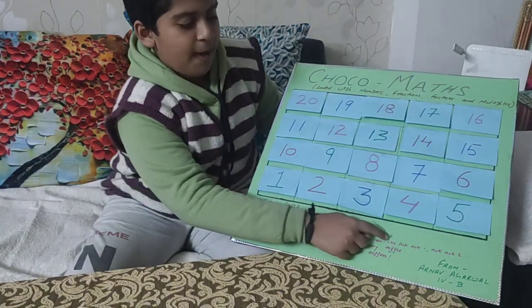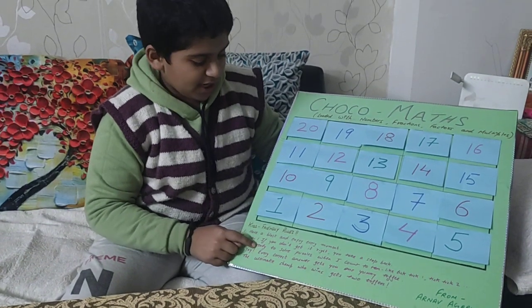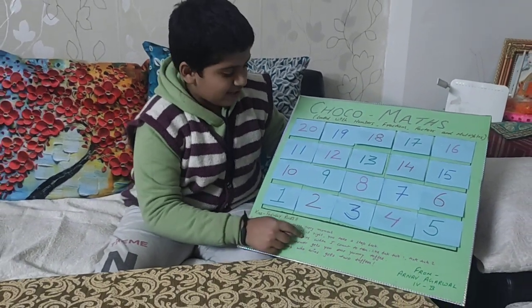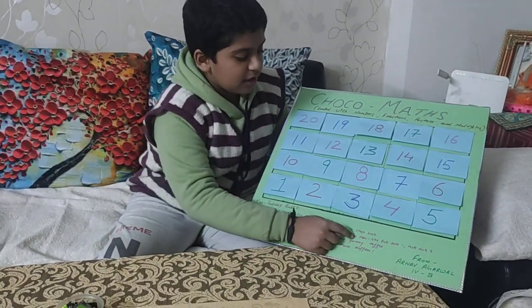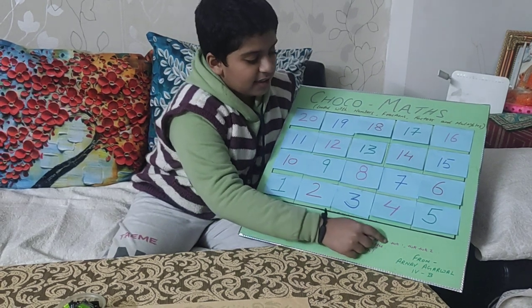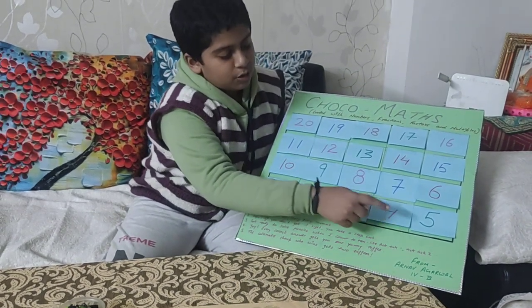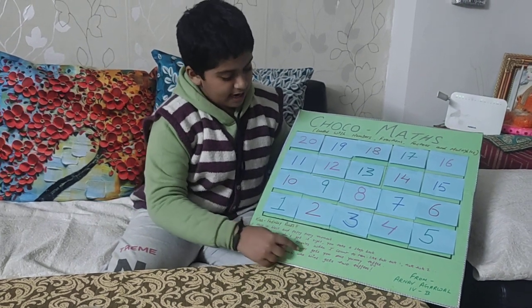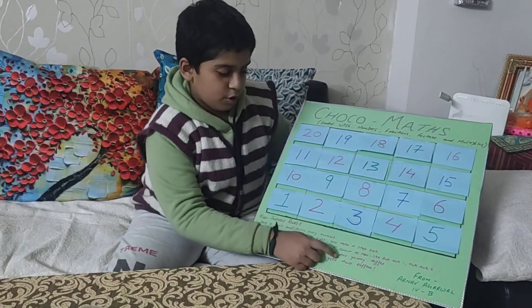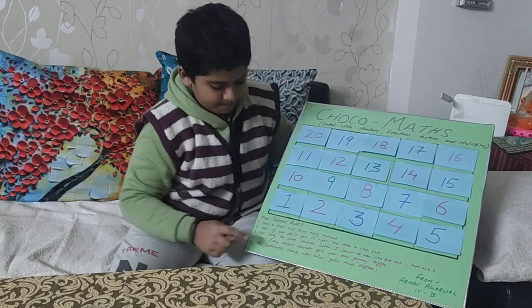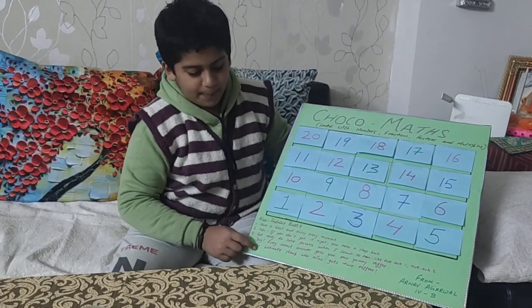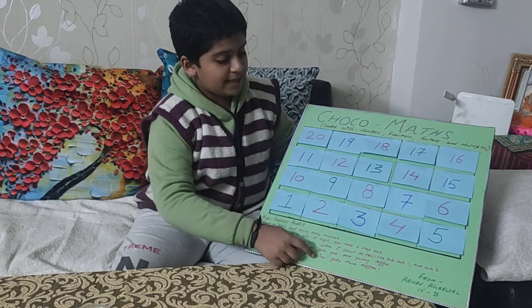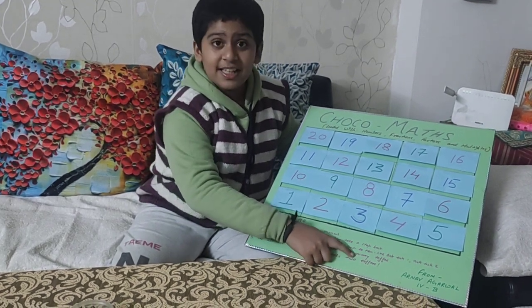you take a step back. Get ready to solve puzzles when I count to 10 like tick tick 1, tick tick 2. Every correct answer gets you one yummy toffee. The ultimate champ who wins gets two toffees.